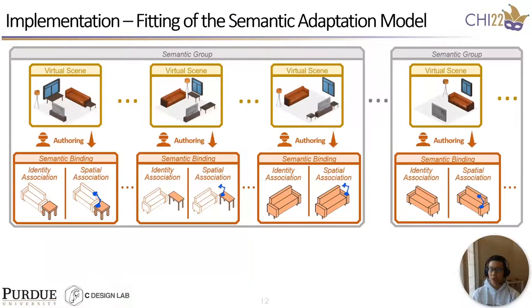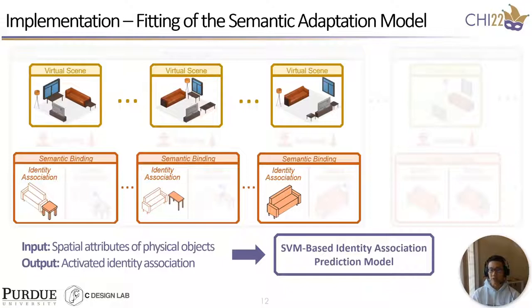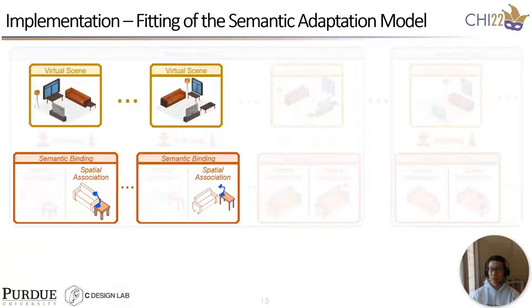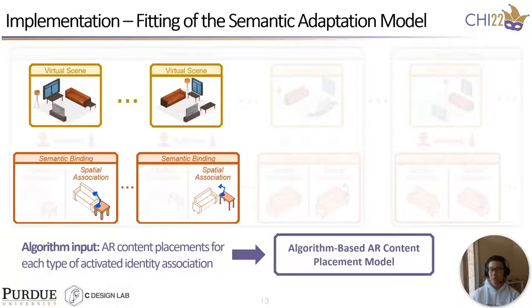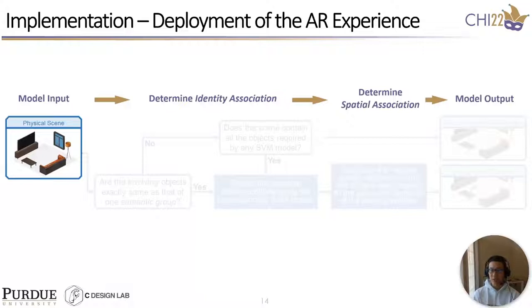Then, our system starts to feed the semantic adaptation model. Since the designer may change the identity association due to spatial variations, we first feed an SVM model for each semantic group to predict which physical object should be used as the identity association under the current physical layout. Next, for each case of the activated identity association, we develop an algorithm to determine the AR content's spatial location. Please refer to the paper for more details of the fitting process.